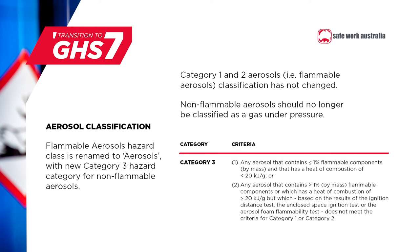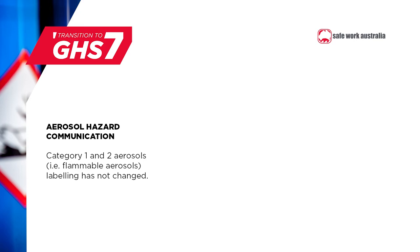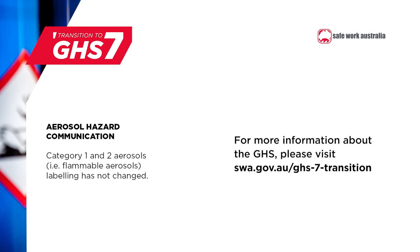Any non-flammable aerosols that were previously classified as gases under pressure should now be classified as non-flammable aerosols. Non-flammable aerosols need the warning signal word and the hazard statement: 'pressurised container — may burst if heated.' Category 1 and 2 aerosols, which is to say flammable aerosols, are not affected by this change and the labels for these chemicals do not need to be updated. If you manufacture or import non-flammable aerosols, you need to review the classification criteria in GHS7 and prepare updated labels and safety data sheets for these products. More information about the changes is available on our website.